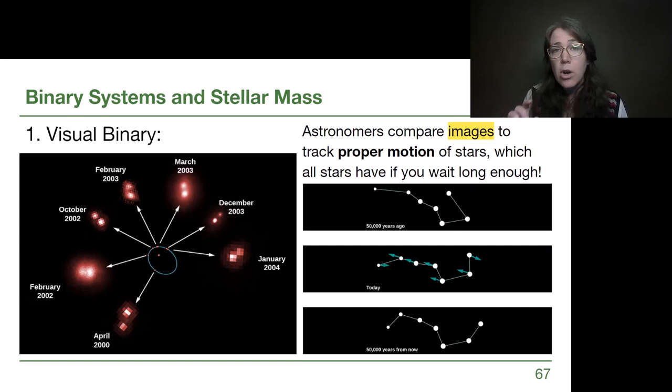For other stars, we typically don't notice that proper motion unless we're waiting really, really long periods of time. So this is showing that based on the motion of stars that we can calculate, the Big Dipper will look obviously different if we wait tens of thousands of years compared to what it used to look like, what we see it as now, and what it looks like in the future.